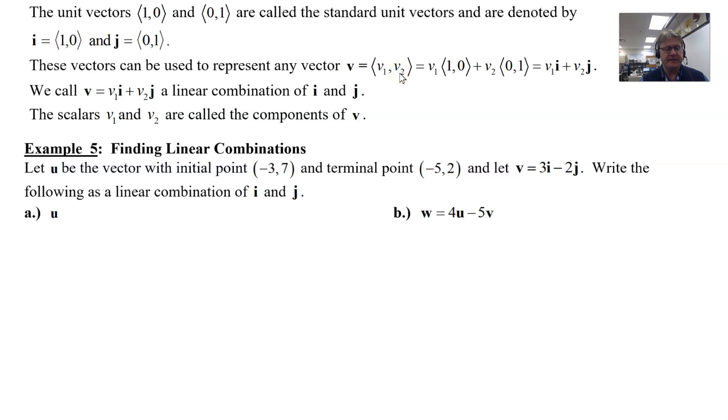If we look at this in a little bit different light here in example five, we're going to let u be the vector with an initial point (-3,7) and a terminal point (-5,2). And then we have this vector v that's already written in linear combination form 3i - 2j. Our job is to write the following as linear combinations of i and j.